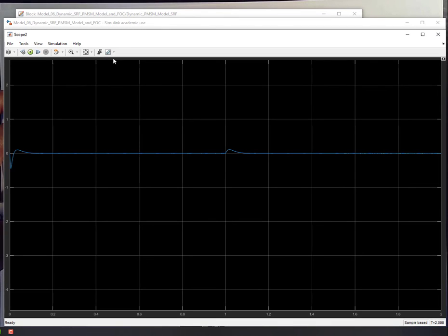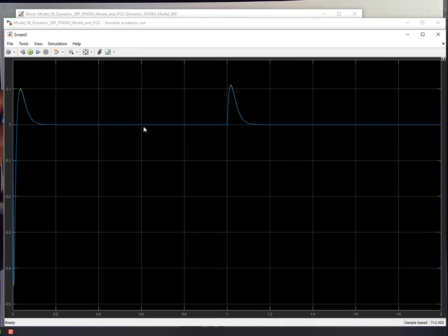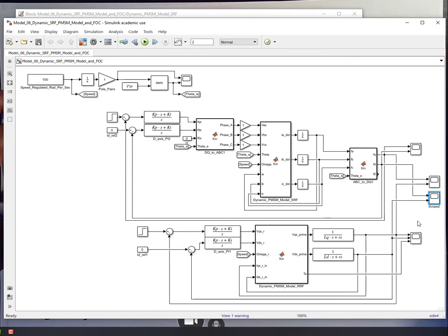And then this is your ID. Again, very, very close result between the DQ and the ABC models. So actually, that's it.